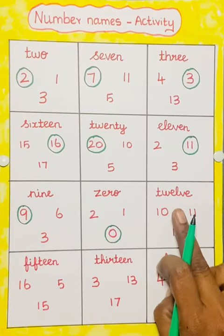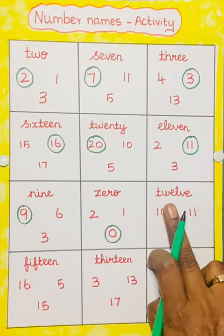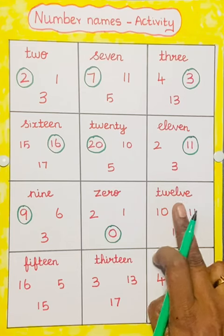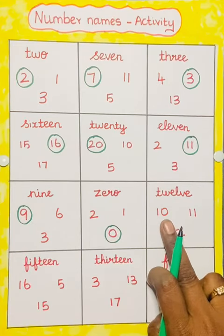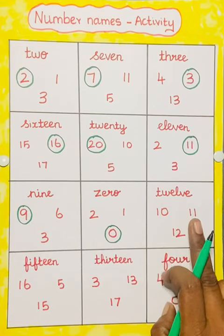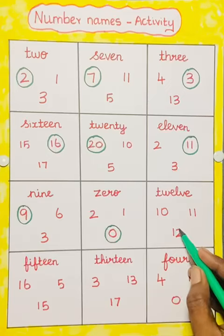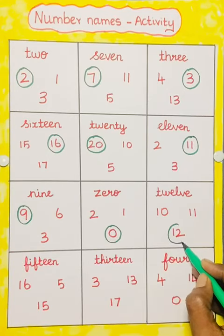Next one is 12. T-W-E-L-V-E. 12. This is 10, this is 11, this is 12. So we have to circle the number 12.